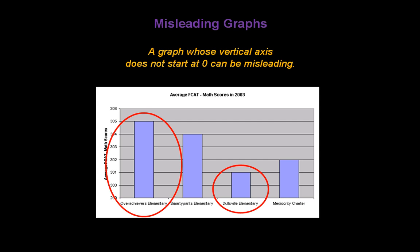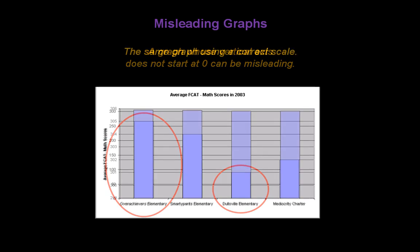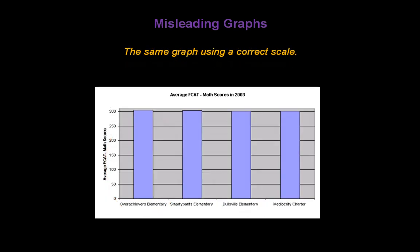Let's remake this graph properly. Here's the same graph using a correct scale. We start at zero at the bottom and use equal intervals all the way to the top. When we fill in the bars for each school, we find there really isn't much difference in the math scores at all.